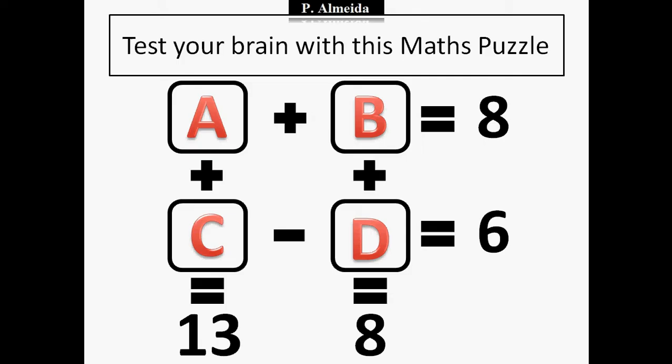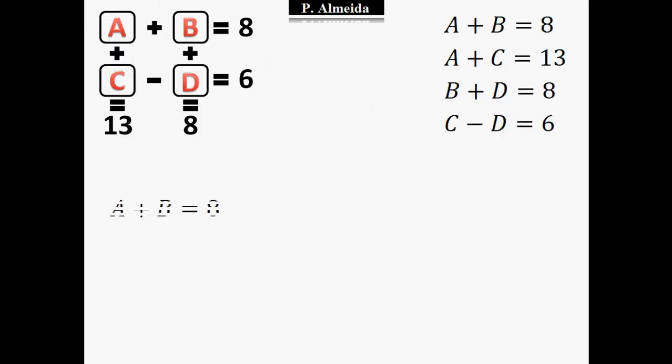Now, if you put it this way, the first thing that you're going to notice is that A and D need to be the same, because I have two different letters adding the same letter B and it gives you the same result. So if A plus B equals 8, and if B plus D equals 8, then A needs to be equal to D.